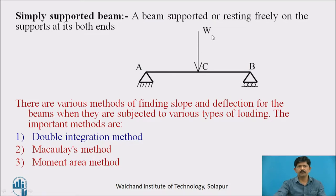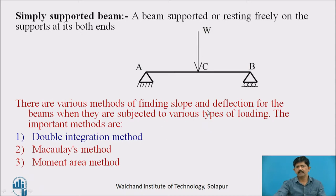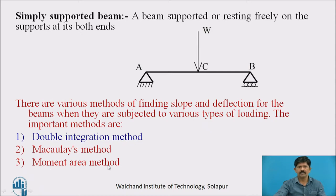A simply supported beam is a beam supported or resting freely on supports at both its ends. There are various methods for finding slope and deflection for beams subjected to various loadings. The important methods are the double integration method, Macaulay's method, and the moment area method. Today we are dealing with the double integration method.